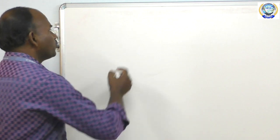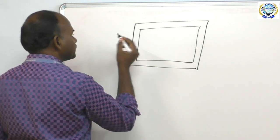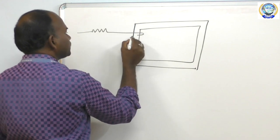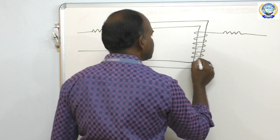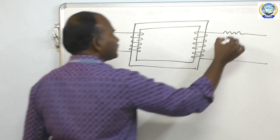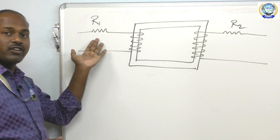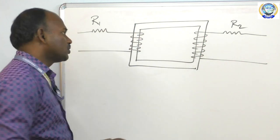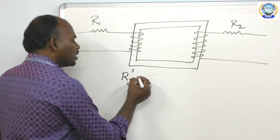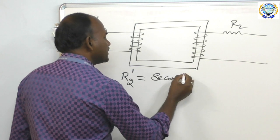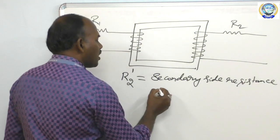Before going to the equivalent circuit, you must know about the transformation from one side to another side. This is a simple transformation technique. Here you have R1 on the primary side and R2 on the secondary side. R2 dash means secondary side resistance referred to the primary side.